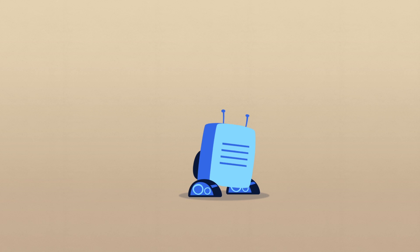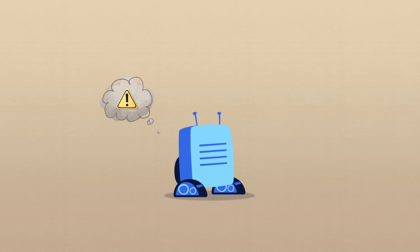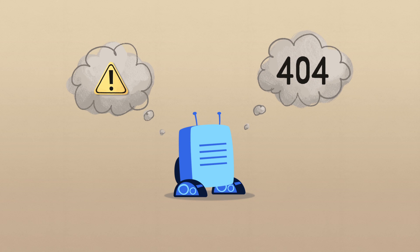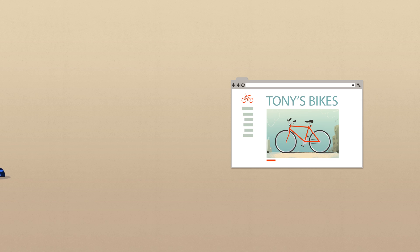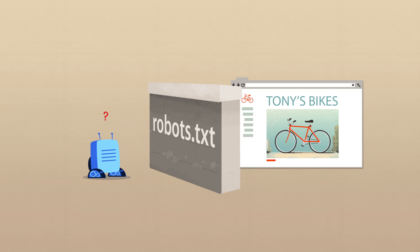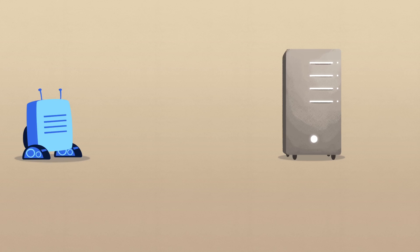There are many different types of crawl errors, but they largely fall into two categories: site errors and specific URL errors. Site errors mean that Google cannot access your site at all and are often caused by your robots.txt file.